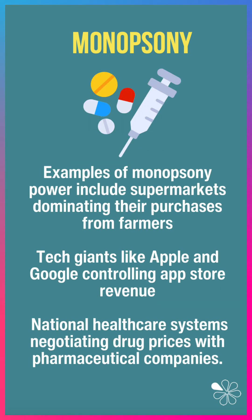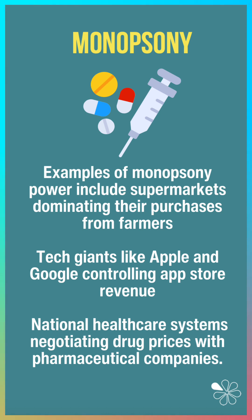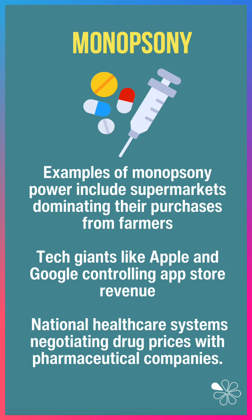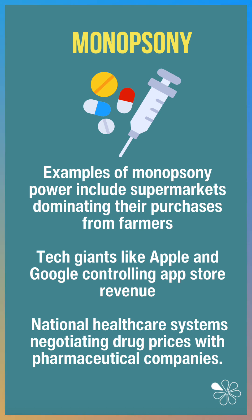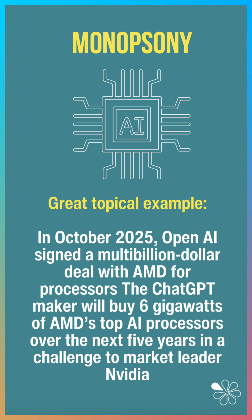Examples of monopsony power include supermarkets dominating buyers from purchases from farmers, the tech giants like Apple and Google controlling the app store revenue, and national healthcare systems, including the NHS, negotiating drug prices with pharmaceutical companies.